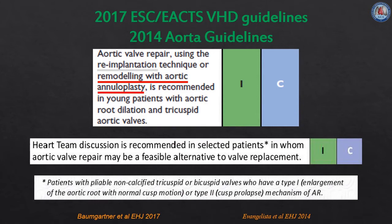The 2017 European Association for Cardiothoracic Surgeons and the European Society of Cardiology guidelines for valvular heart disease recommend that for management of aortic root aneurysm, re-implantation or remodeling with aortic annuloplasty should be used for valve-sparing root replacement. This refers to the need of addressing the annulus. They also recommend heart team discussion for selected patients with pliable non-calcified aortic valve insufficiency in whom aortic valve repair may be a feasible alternative to valve replacement. These are Class 1C indications.